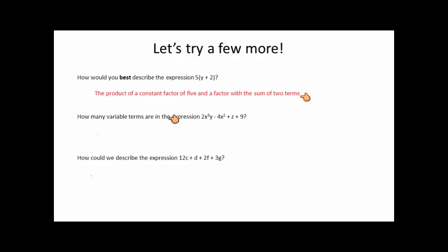Let's look at another one. How many variable terms are in the expression 2x to the third y minus 4x squared plus z plus 9? Notice it says variable terms, not variables. This term has a variable, this term has a variable, and this term has a variable. Therefore, we have three terms that contain variables.